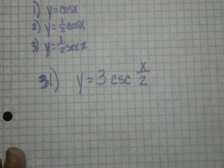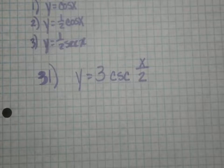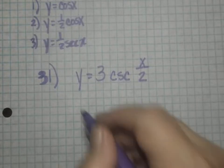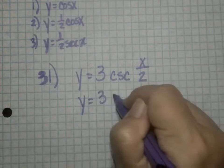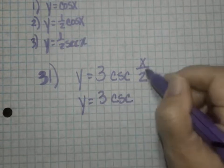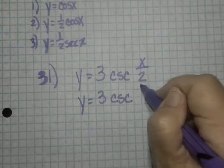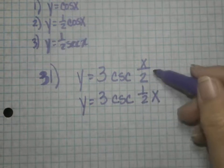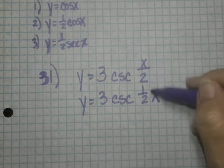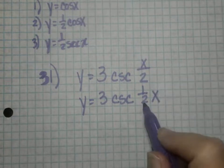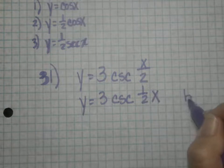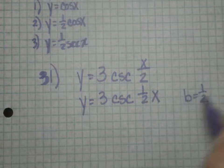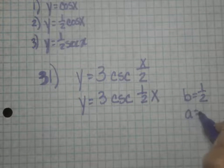All right, so the first thing that I recommend is rewriting this equation without the fraction. Dividing by two is the same thing as multiplying by a half, right? So now these two equations are saying the exact same thing. But now I can see that my letter b is a half and my letter a is 3.